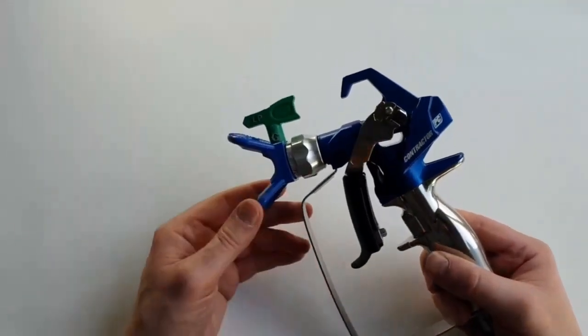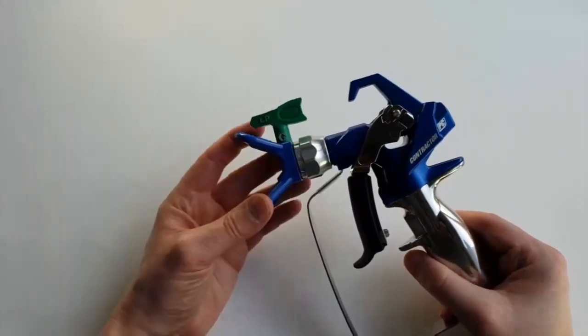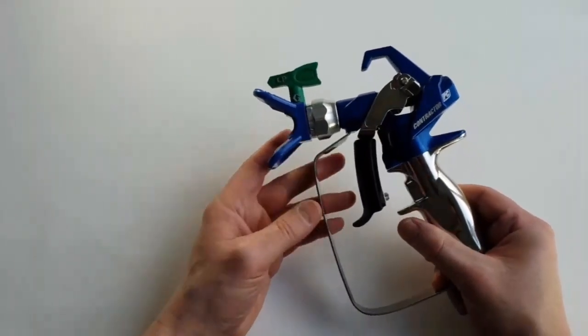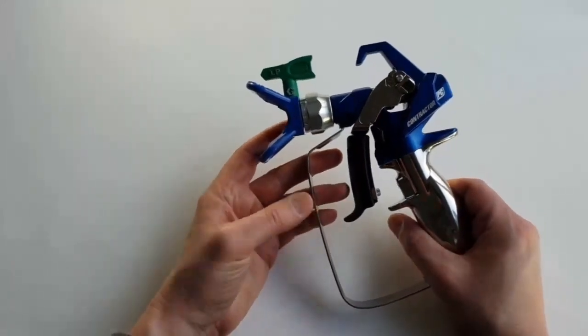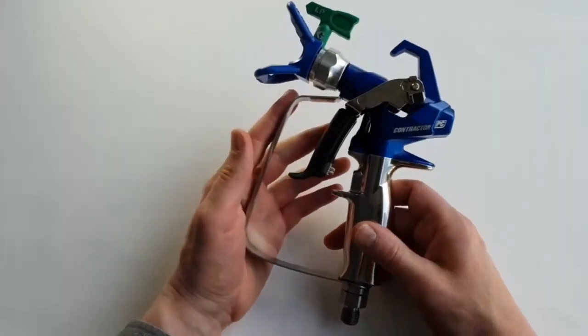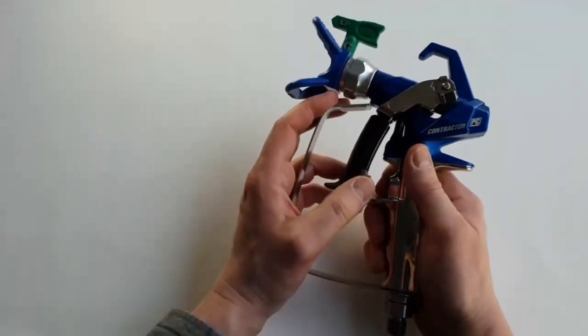You've got a classic spray tip holder and LP spray 517 - low pressure for less overspray. That tip and the spray tip holder.